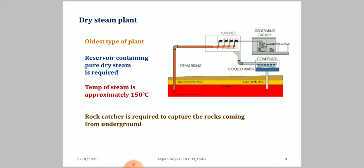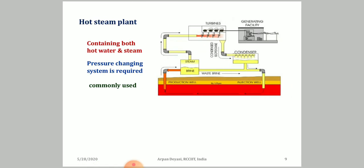The dry steam plant is the oldest type of plant. The reservoir contains pure dry steam, with temperature varying from 150°C to 200°C. Rock catchers are required because heating can dislodge rocks, which can damage mechanical infrastructure such as the condensation system, turbine, or electricity generation equipment. So rock catchers are essential for dry steam plants.